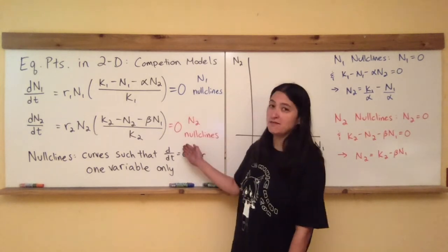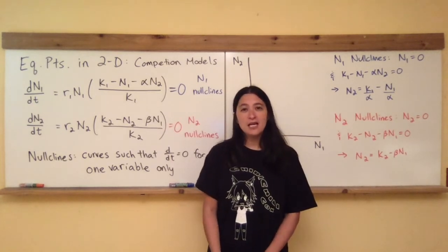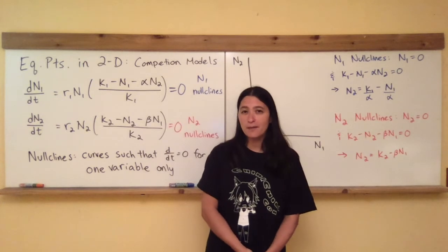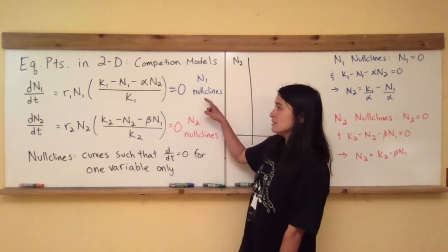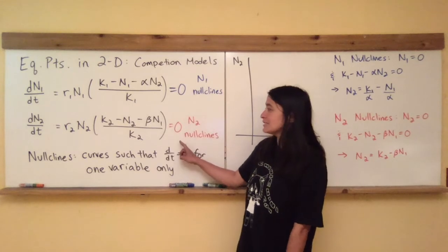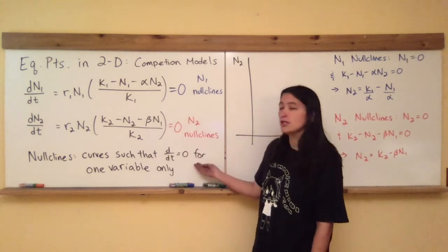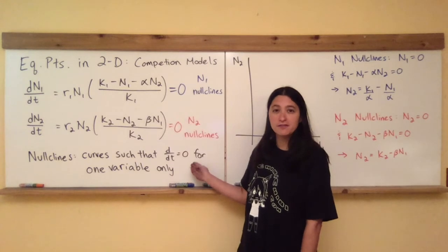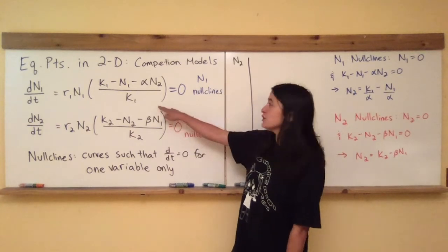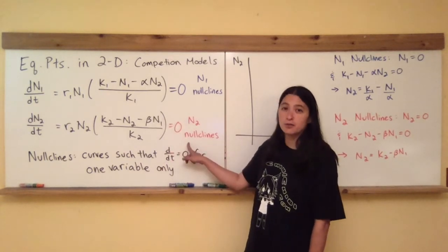In two dimensions, both equations have to be equal to zero at the same time, and this is easiest to understand using a graph. I'm going to graphically illustrate the simultaneous nature of both being equal to zero by using two different colors. I'm going to set species one equal to zero in blue — those are the N1 nullclines. I'm going to set species two's rate equation equal to zero in red — those are the N2 nullclines. Nullclines are curves where the ddt, or the time derivative, is equal to zero just for the one variable.